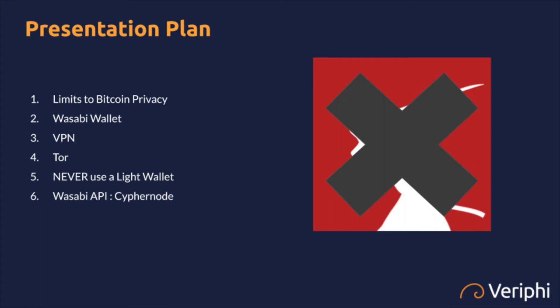But I'm still going to show you how to use the wallet and how to initialize it. And then I'm going to talk about VPNs, then Tor — the Onion Router. I'm going to finish with a mention on Lite Wallets and Node Wallets. And finally, I'm going to talk about Wasabi and Wasabi API CypherNode for those who are more developers and businesses here.